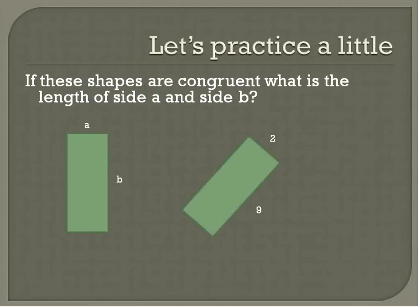So if these shapes are congruent, what is the measurement of side length a and side length b? Well, if we look at our figure here, our rectangle on the right, we know that the side length a would be congruent to this short side length. And so we know that the measurement of a is equal to 2. b would be congruent to the longer leg of the rectangle. In other words, b is equal to 9. So we're able to see that pretty quickly.